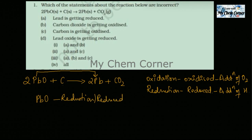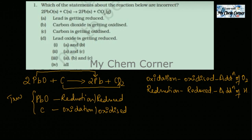Now for carbon: on the reactant side it was just carbon, and on the product side it became carbon dioxide. Carbon has gained oxygen, meaning addition of oxygen has occurred — so carbon undergoes oxidation, or carbon is oxidized. So the true statements are: C (carbon is getting oxidized) and D (lead oxide is getting reduced).